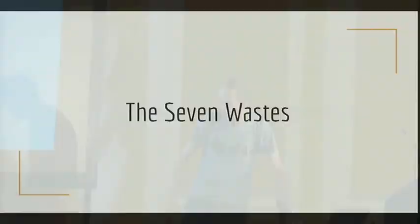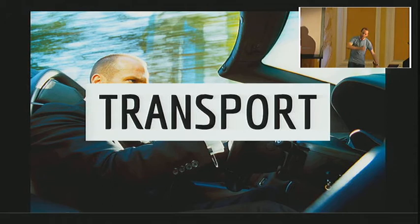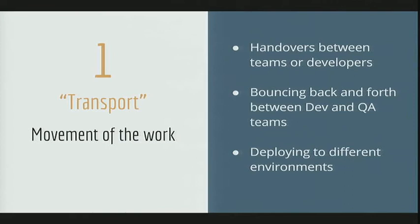So let's look at the wastes. The first waste is transport, and transport is movement of work — whenever we're doing a piece of work and handing it off to somebody else. For example, I'm a back-end developer and I finish and say, 'there you go front-end guys, I've built you an API.' Often that causes slowness because there's confusion, misunderstanding, or simply waiting for the front-end guys to be free. That is an example of transport.